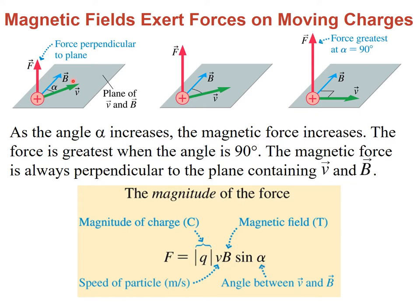When the angle is zero, the velocity is going to be parallel to the field, so the force is zero. If the velocity goes all the way down so that the angle is 180, then sine of 180 gives you zero and the force is zero — the particle moving anti-parallel to the field feels no force. The maximum value of the force happens when sine equals one, which occurs when the velocity is at 90 degrees with respect to the field. The force is greatest when the angle is 90 degrees.